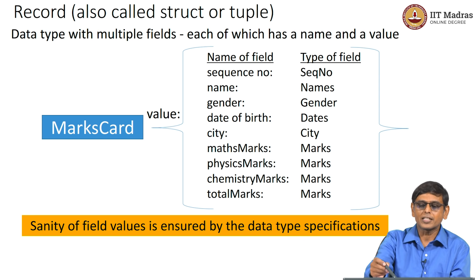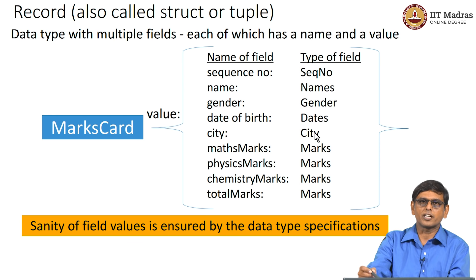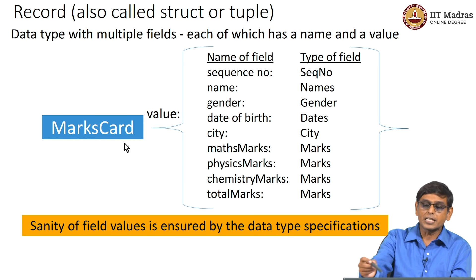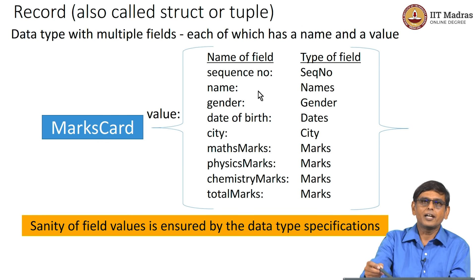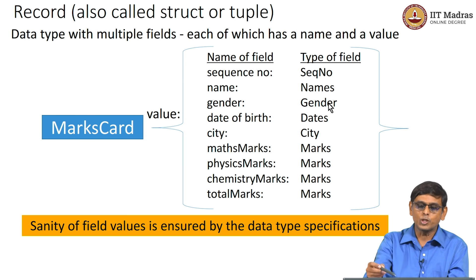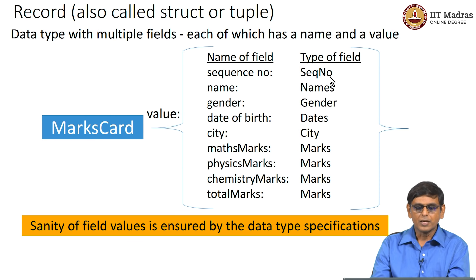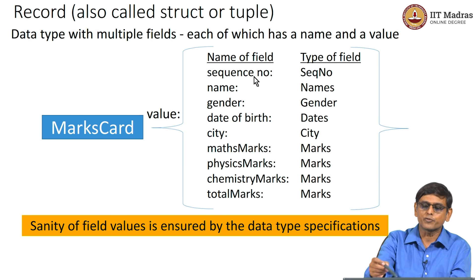We had the sequence number, and we have already defined the correct data type for it, which was CQNO. So I can write: sequence number is of the sequence number data type, name is of the names data type, gender is of the gender data type, date of birth is of the dates data type, city is of the city data type, and the marks are of the marks data type. So basically the marks card is a record — a record data type which contains various fields, and each field has a specific data type. The sanity of this marks card is ensured because you have defined the field data types.